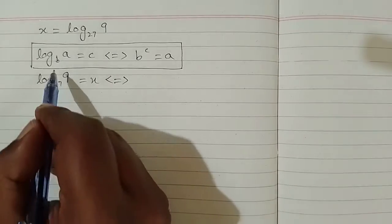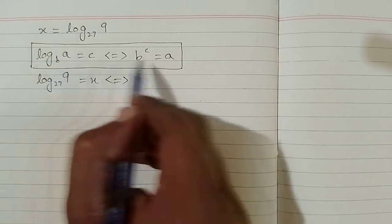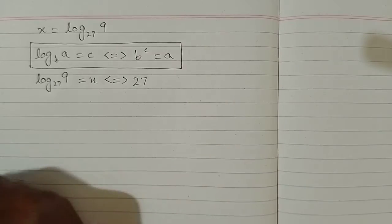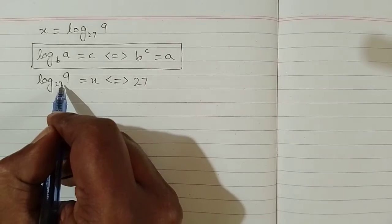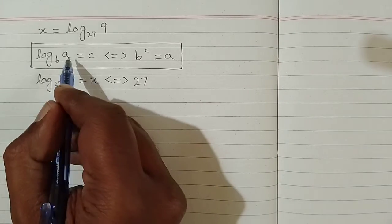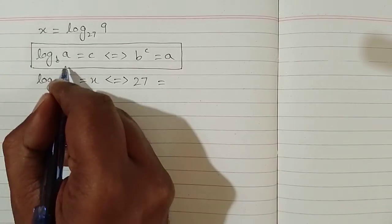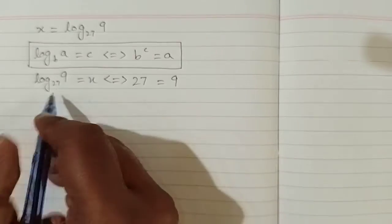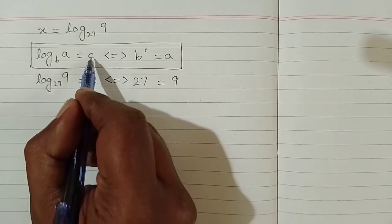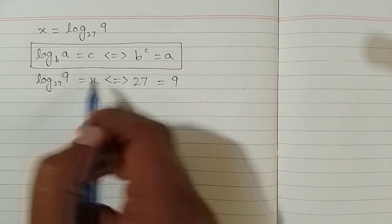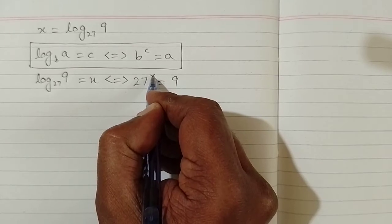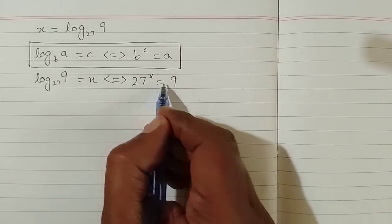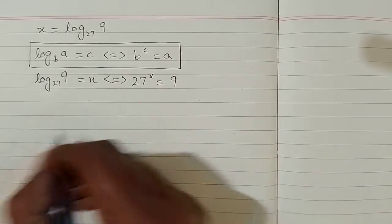We have 27 in place of b, so we write 27; 9 in place of a, so we write 9; and in place of c we have x. So 27 raised to the power x is equal to 9.